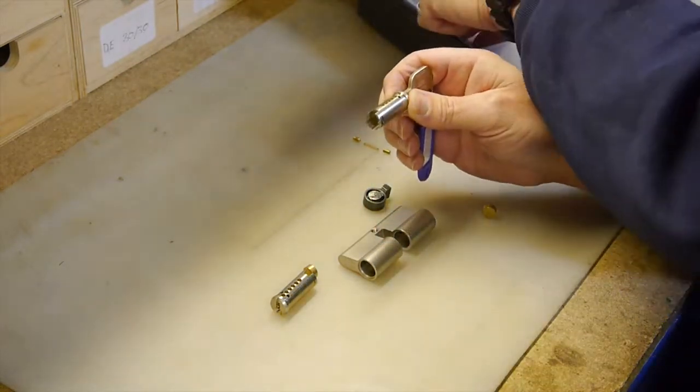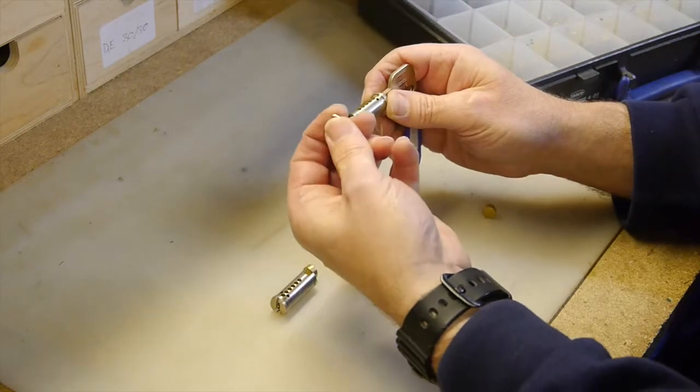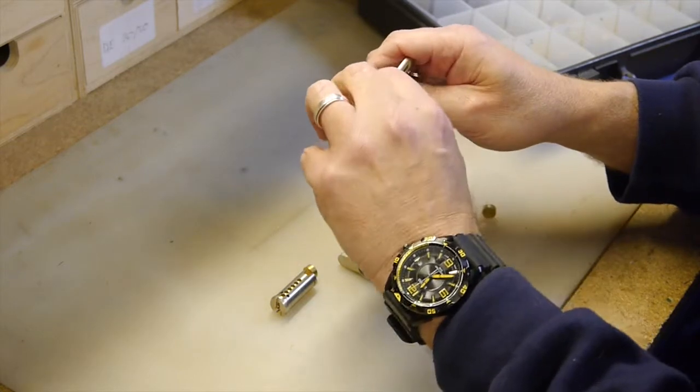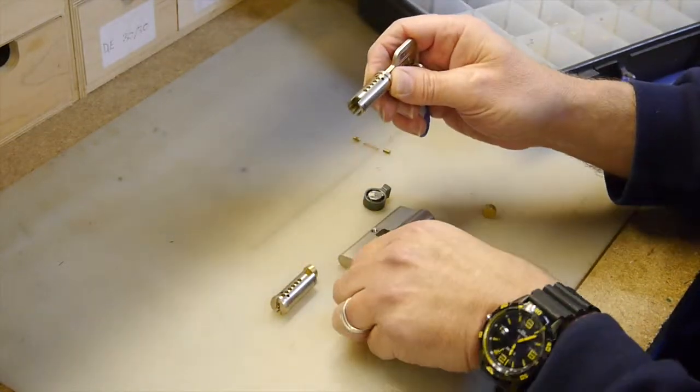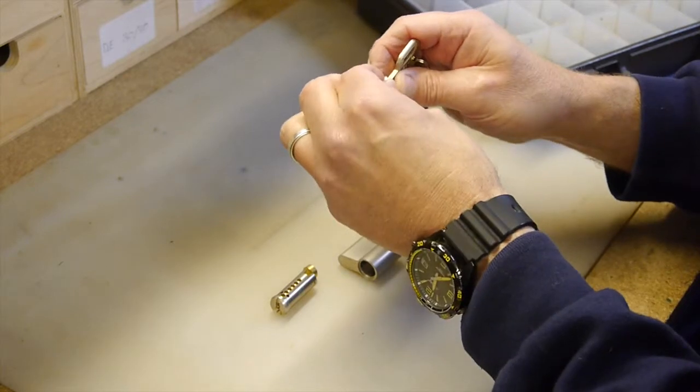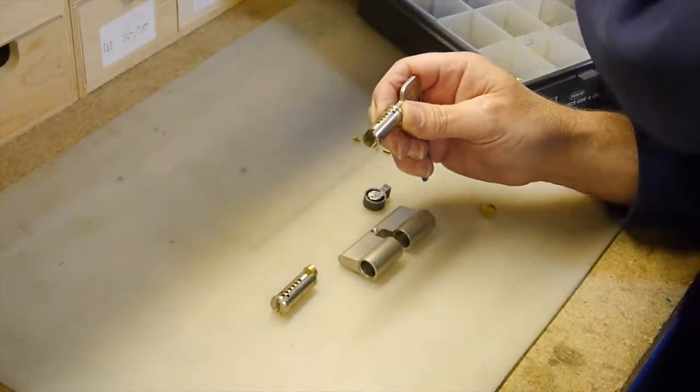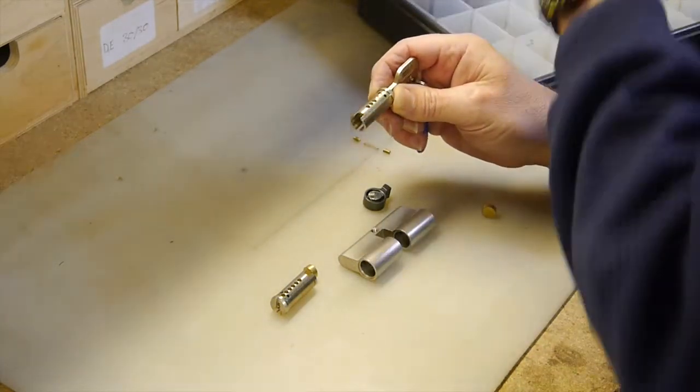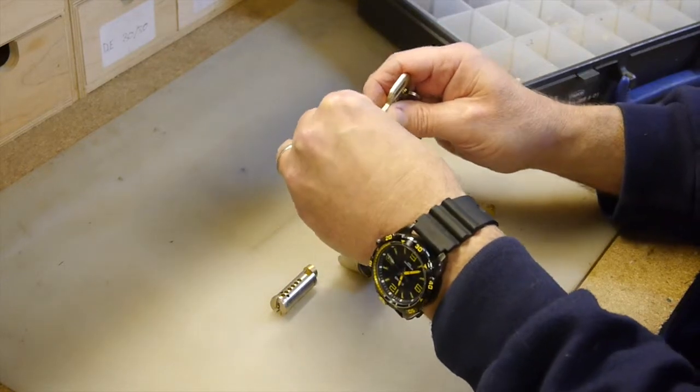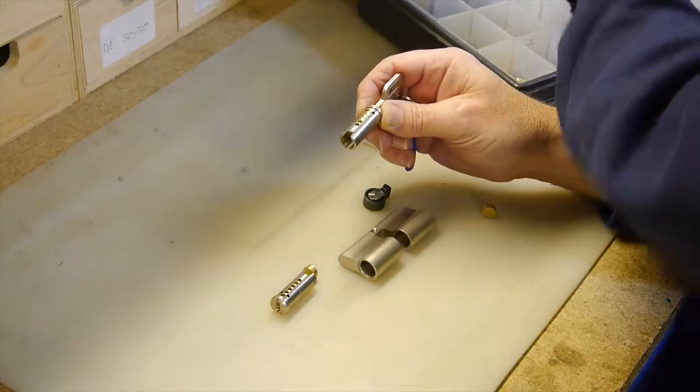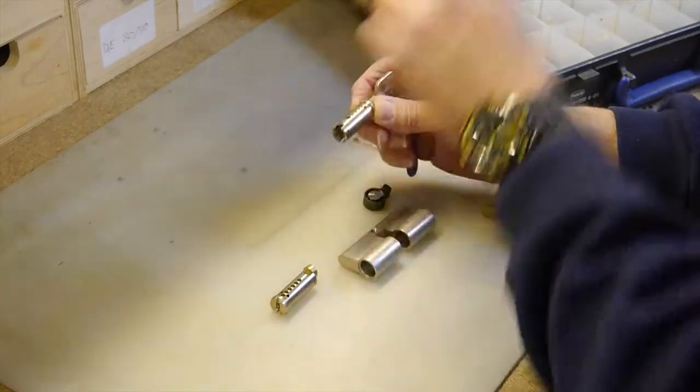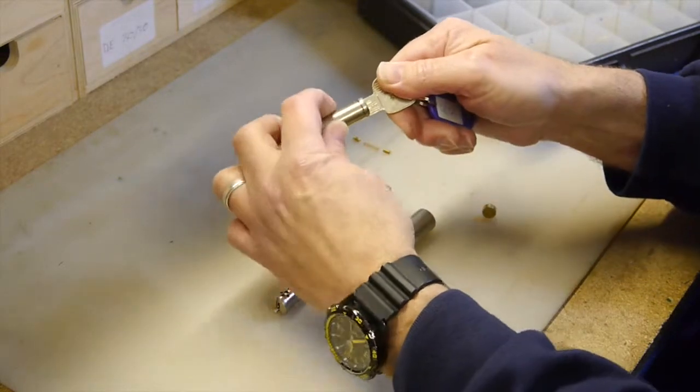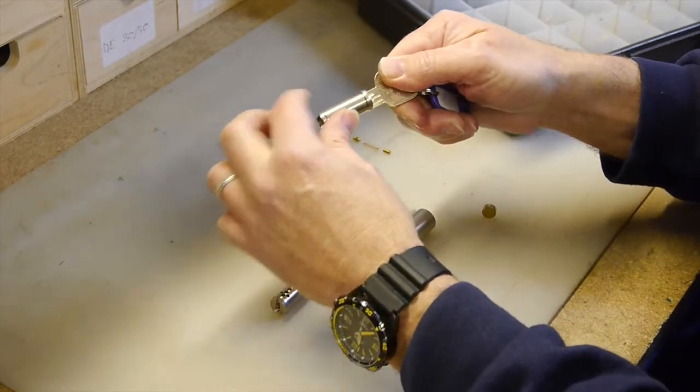Two is the first one. The next is number one pin, careful to put the pointed side down so it lines up with the cut on the key. The next is five, another two.